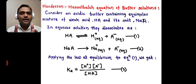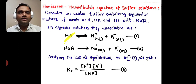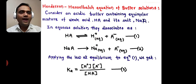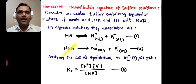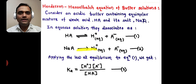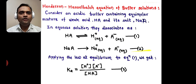Now, in aqueous solution, our weak acid dissociates as: HA gives H⁺ (aqueous) and A⁻ (aqueous). This is equation 1. And our salt, NaA, will dissociate completely to form Na⁺ (aqueous) and A⁻ (aqueous). This is equation 2.